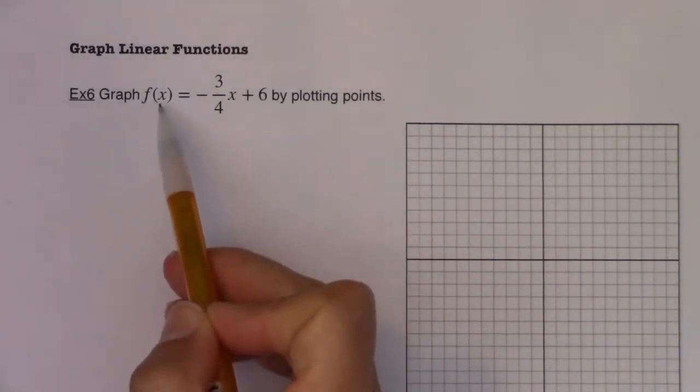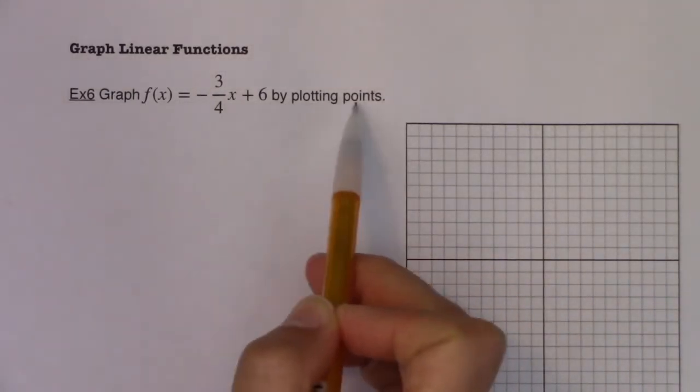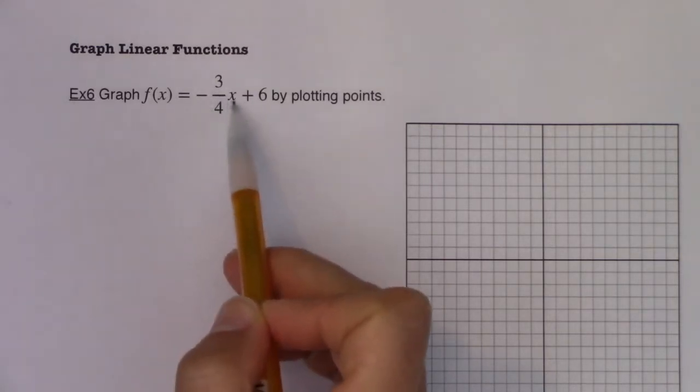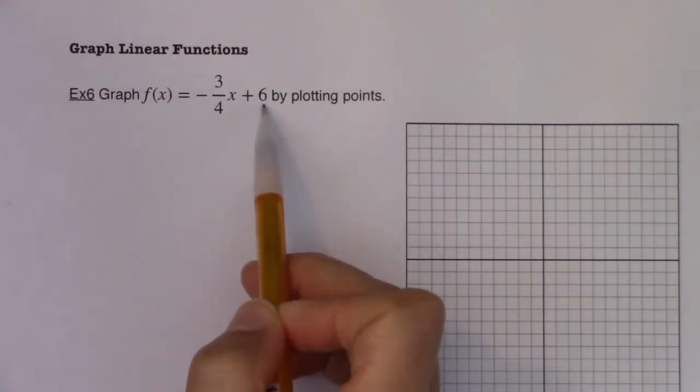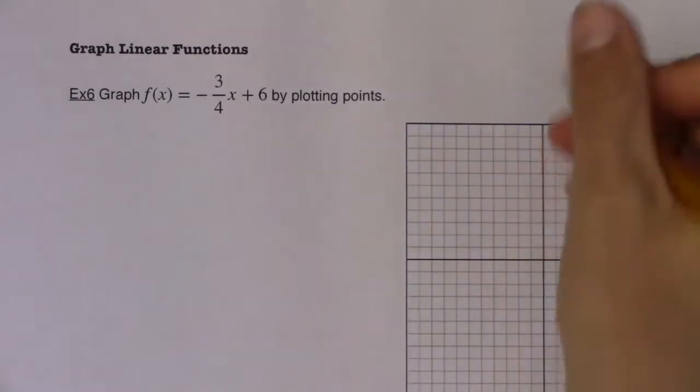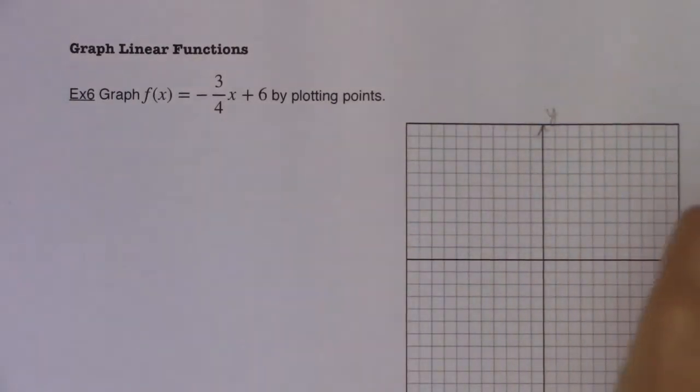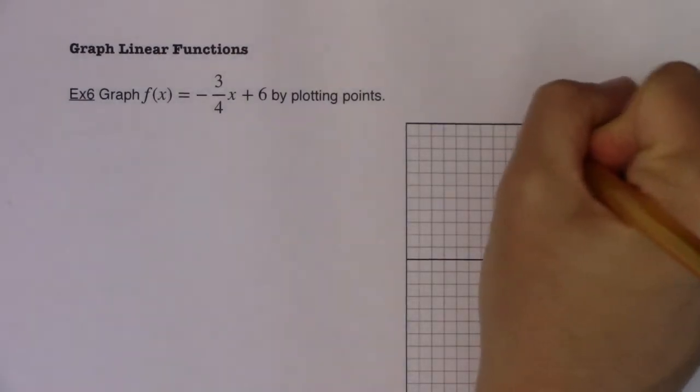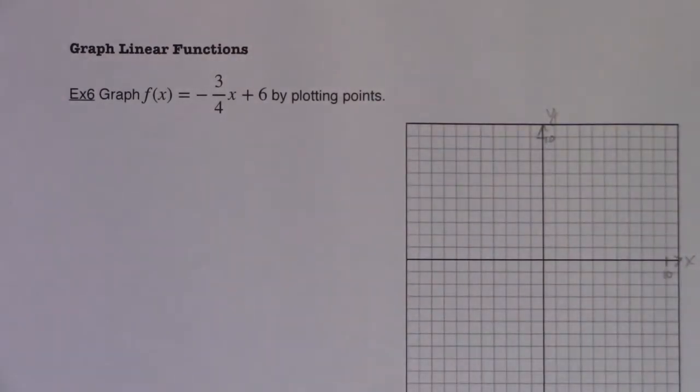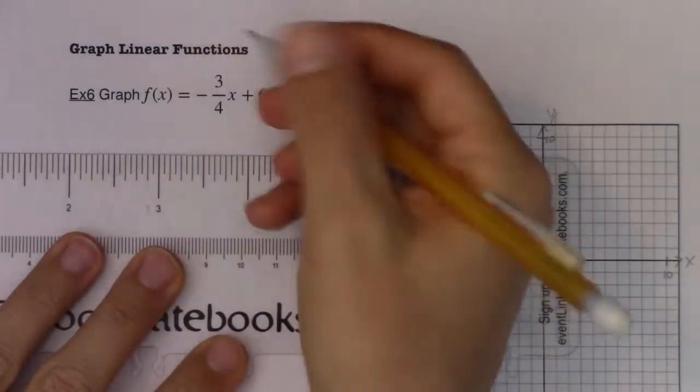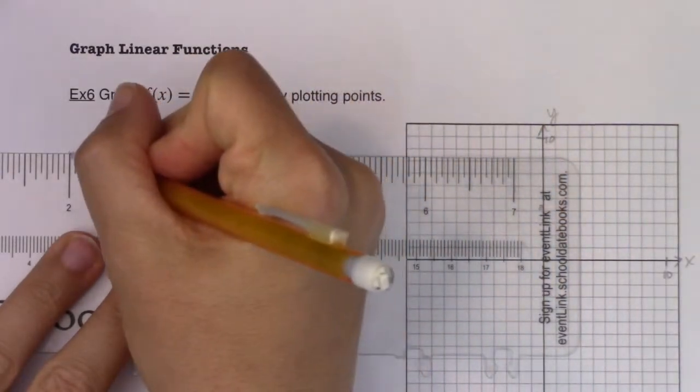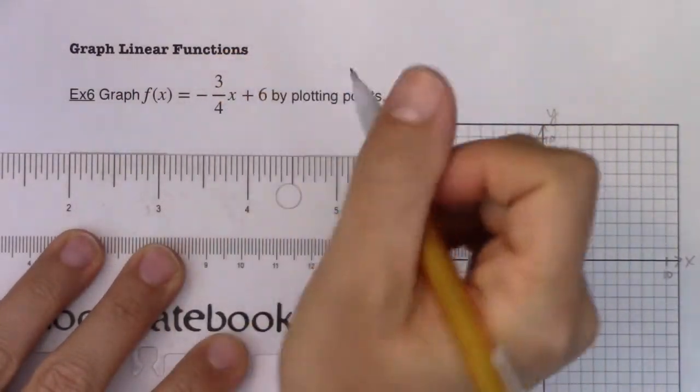This is asking you to graph this linear function by plotting points. I can see mx plus b here, slope is negative three-fourths and the y-intercept is 0,6, and I'm being asked to plot this using points. This is a tried and true method that works for any function, linear or when we move beyond linear. If you're not sure what the shape of this graph would look like, let's say you don't recognize this as a line.